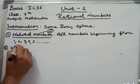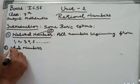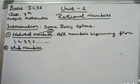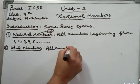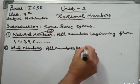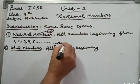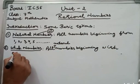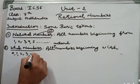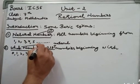Second are whole numbers. When we include zero in the natural numbers, they become whole numbers. All numbers beginning with zero — 0, 1, 2, 3, 4, 5 and so on — are called whole numbers. They are denoted by W.